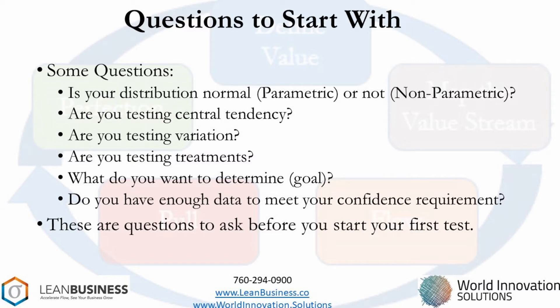Any statistical exercise requires some planning. The planning will align the statistical process with the information needed to make the desired business decision. The first question to ask is whether your sample comes from a population that is normally distributed. If you incorrectly assume the population is normal and it is not, you will bring error into your results.